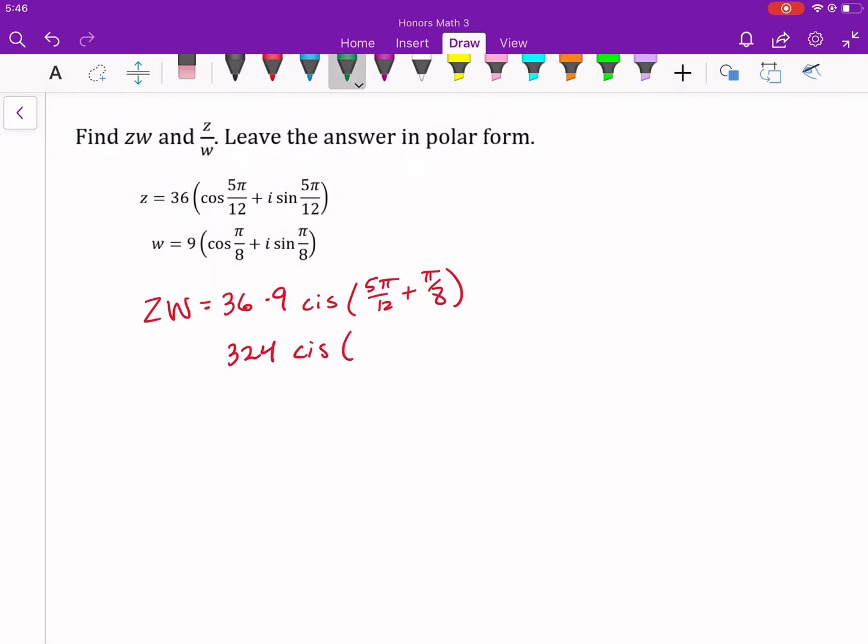Well, 36 times 9 is 324. I need a common denominator, so that's the only reason this one's a little tricky. So 5 pi twelfths and pi eighths, if we get both of them to be over 24, so this one I'm multiplied by 2 over 2, and this one by 3 over 3, I would get 10 pi 24ths and 3 pi 24ths. So we're going to go ahead and add those together. So 10 plus 3 is 13 pi over 24. So that's the one answer.